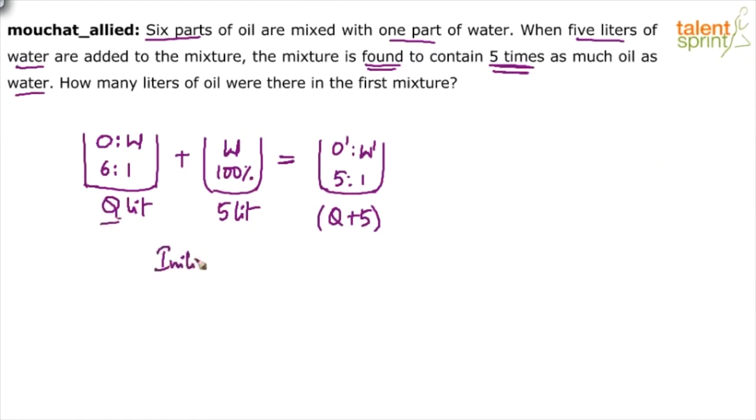is equal to final oil quantity. Let us work on this now. How much is the oil initially on the left-hand side? You see, oil can be taken as 6 out of 7. You know the ratio, right? You know the ratio and you know the quantity. So initial oil will be 6 parts out of 6 plus 1, 7 parts, into Q, plus zero here. There is no oil. Zero equals to final oil, which is 5 parts out of 5 plus 1, 6 parts,